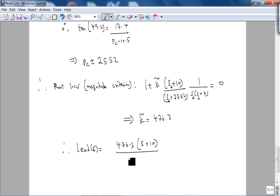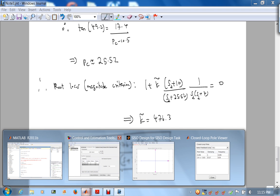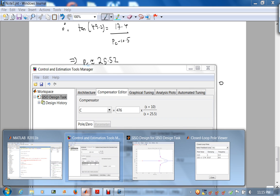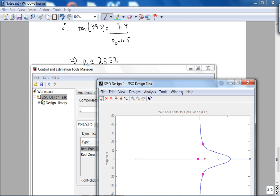Now we're not done in the sense we have to find k tilde, but now k tilde is very easy. Therefore using the root locus magnitude criterion, I want to save this. You have one plus k tilde, I know my zero, I know my pole times one over s times s plus seven evaluated at the desired one of the desired poles should be equal to zero. So if we use the magnitude criterion, the k tilde, and this is the important point, it's going to be 476.3. Therefore my lead compensator of s is going to be 476.3 times s plus 10 over s plus 25.52.